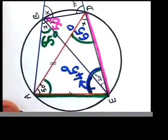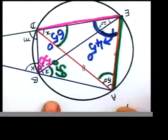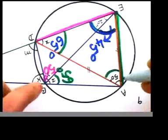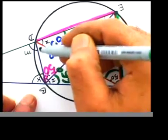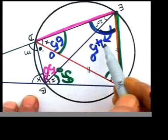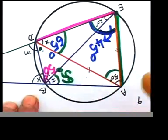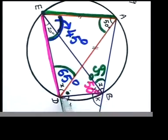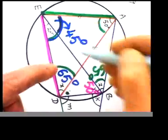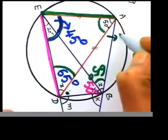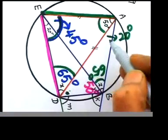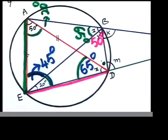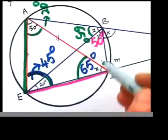Turning again to check other chords: AB is the chord now. AB makes an angle of 45° here, and the same chord AB makes another angle on the circumference which would also be 45°. Chord BD makes two angles — one is 20°, and the other is also 20°. So we've now filled all the angle blanks: z = 65°, y = 50°, x = 65°.